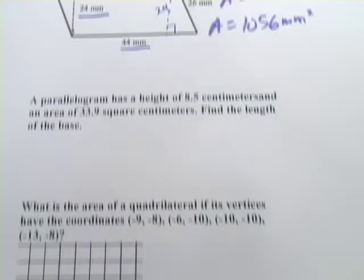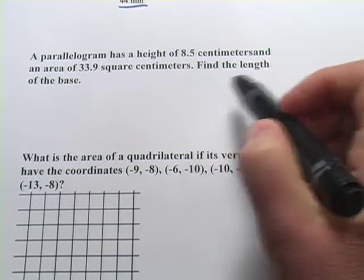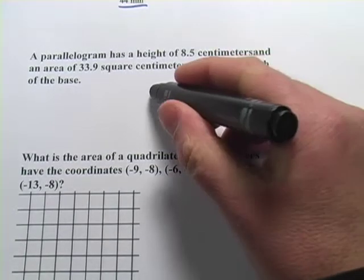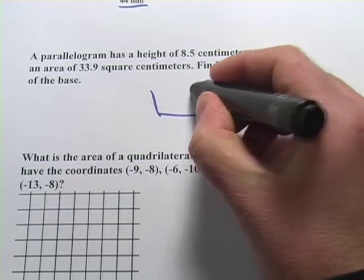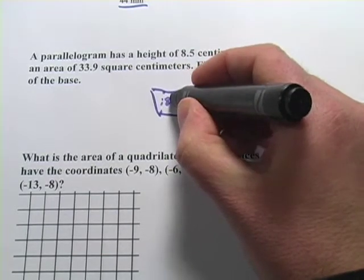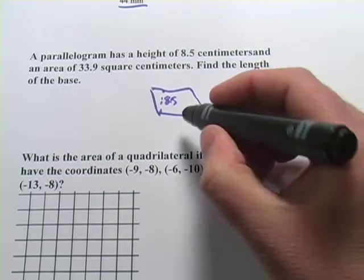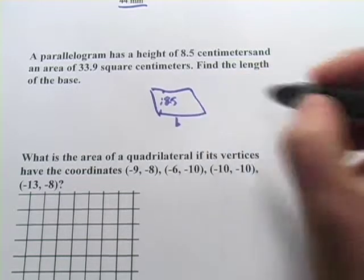Let's try another one. This one says a parallelogram has a height of 8.5 centimeters. So let's just go ahead and draw a picture here, because I'm more comfortable that way. So there's our height, and it's 8.5 centimeters. And an area of 33.9, find the length, so we don't know the length of the base.